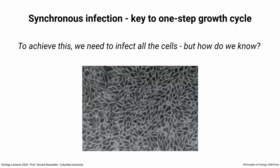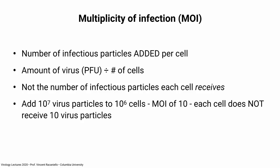To do a one-step growth curve, you have to infect all of the cells. That's determined by the multiplicity of infection, or MOI — the number of infectious particles you add per cell. You calculate it by taking the PFU added and dividing by the number of cells. It's not the number of particles each cell actually gets; that turns out to be different. For example, if you add 10⁷ viruses to a million cells, that's an MOI of 10. MOI is what you add as an investigator; what each cell actually receives is governed by a statistical distribution.